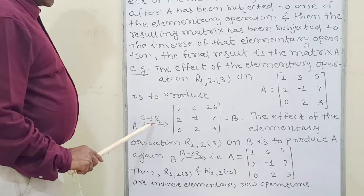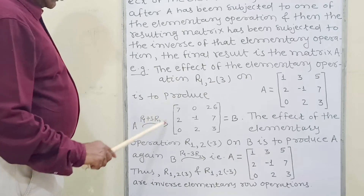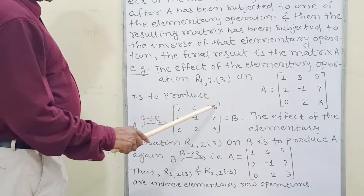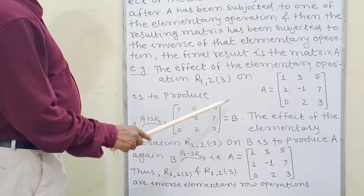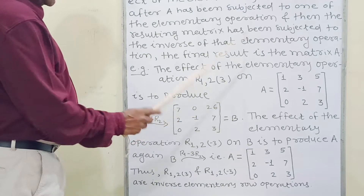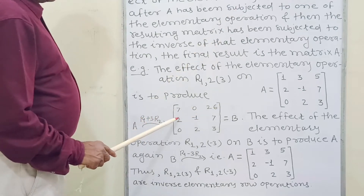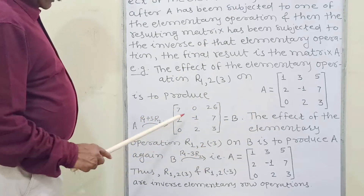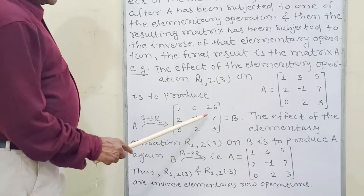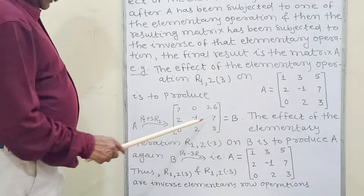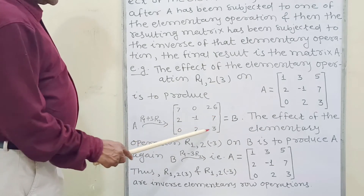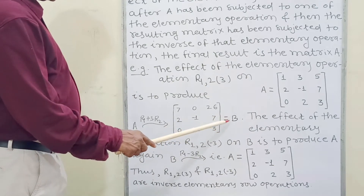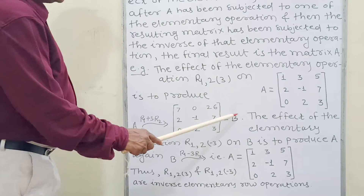After applying the R1 plus 3R2 operation, the matrix form gives the result: [7, 0, 26; 2, -1, 7; 0, 2, 3]. The remaining rows R2 and R3 are unchanged. We call this matrix B.